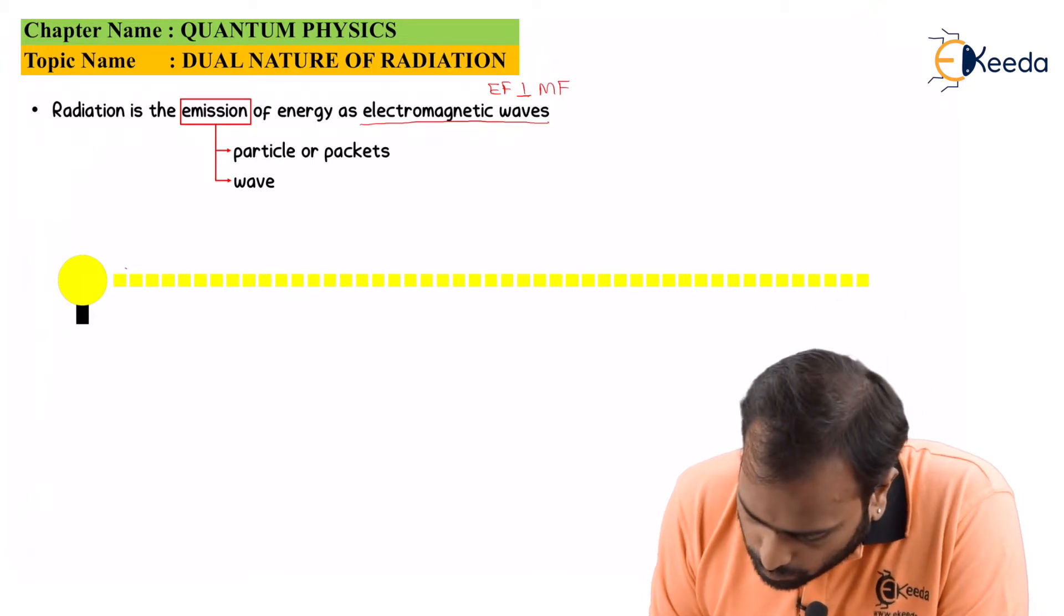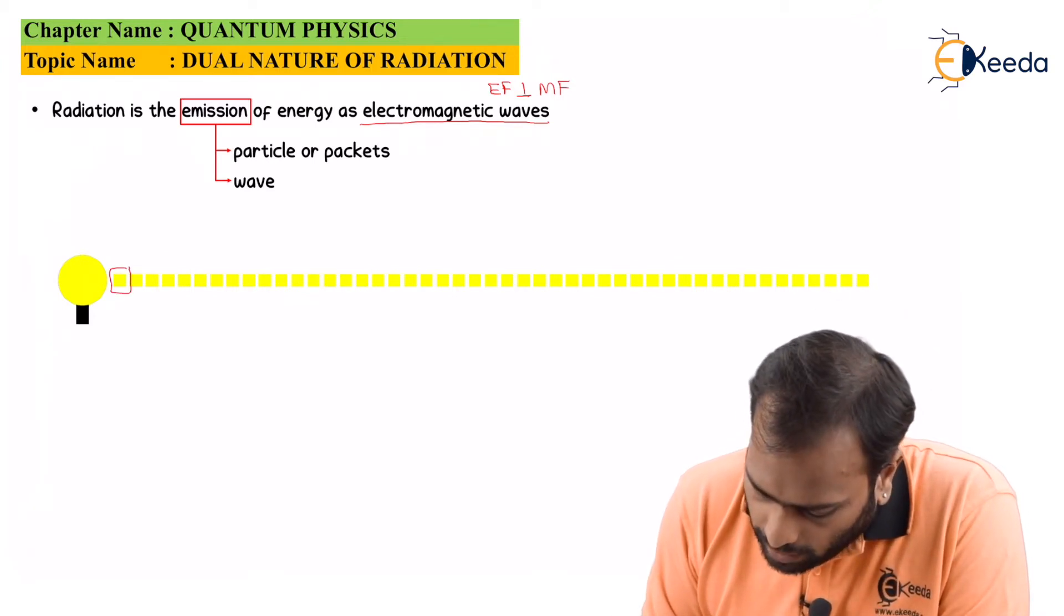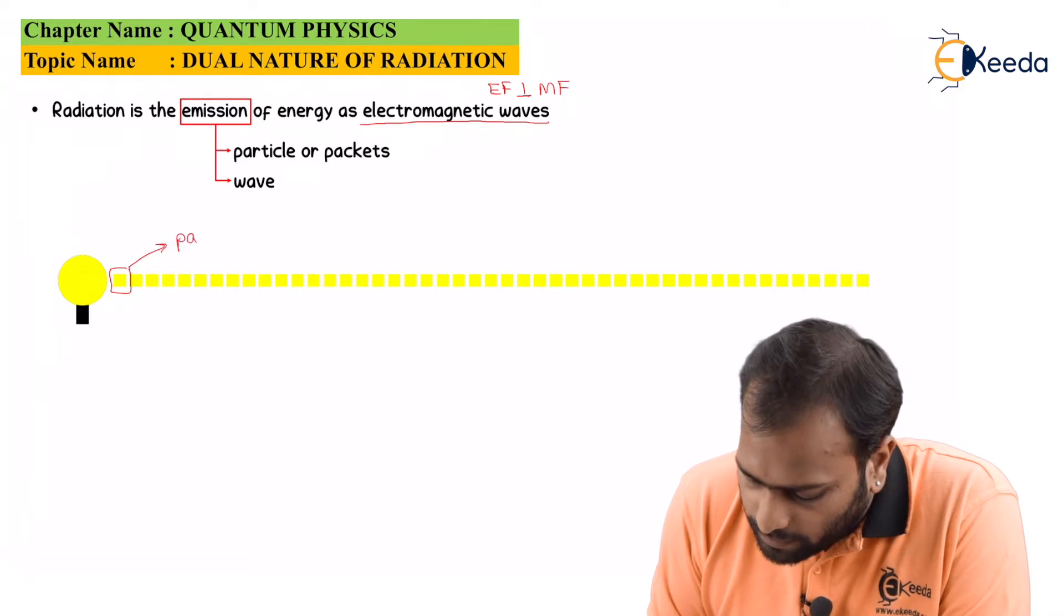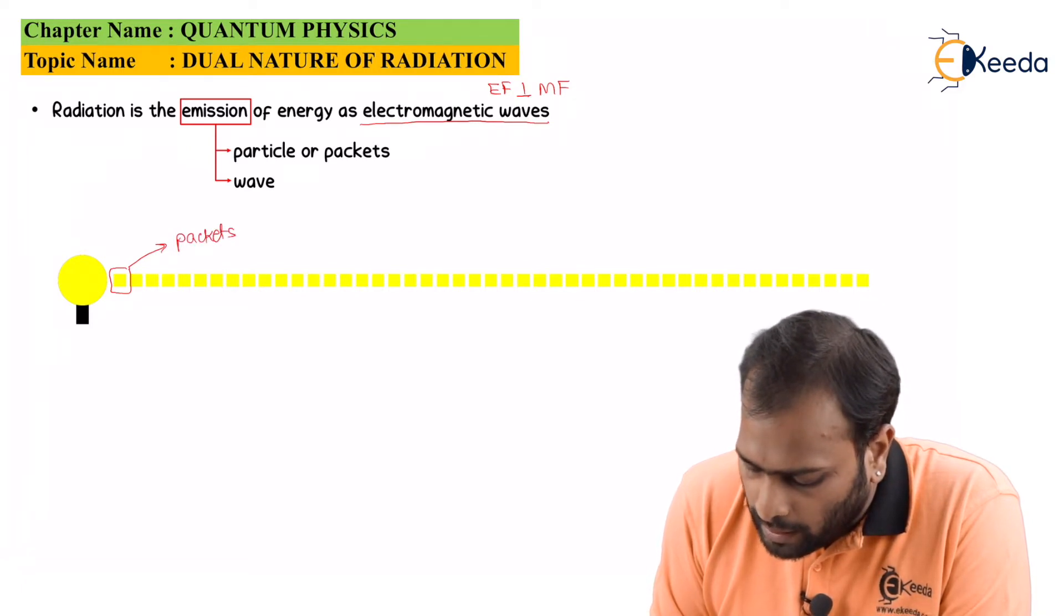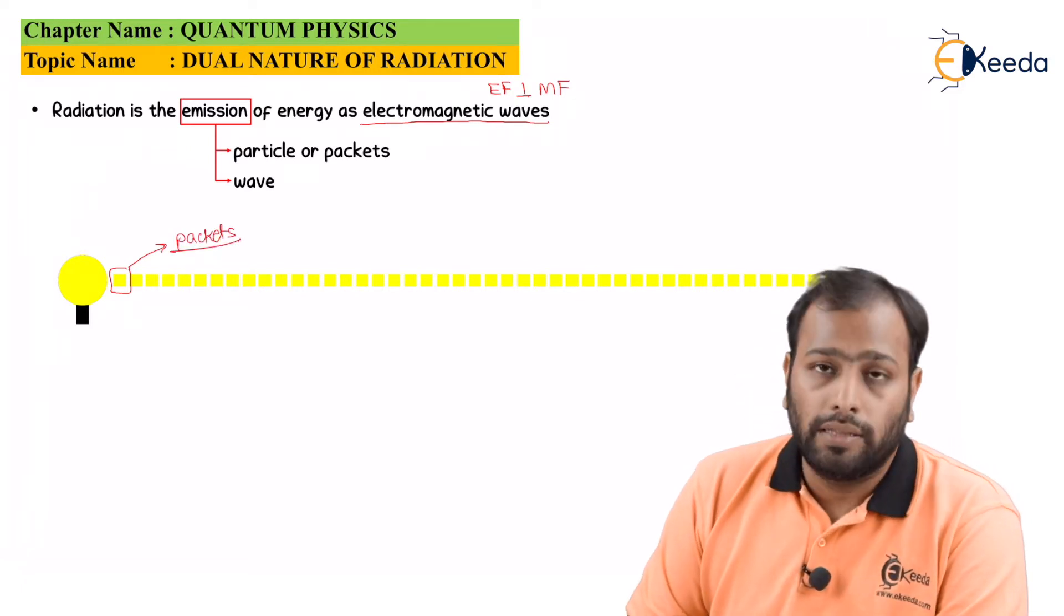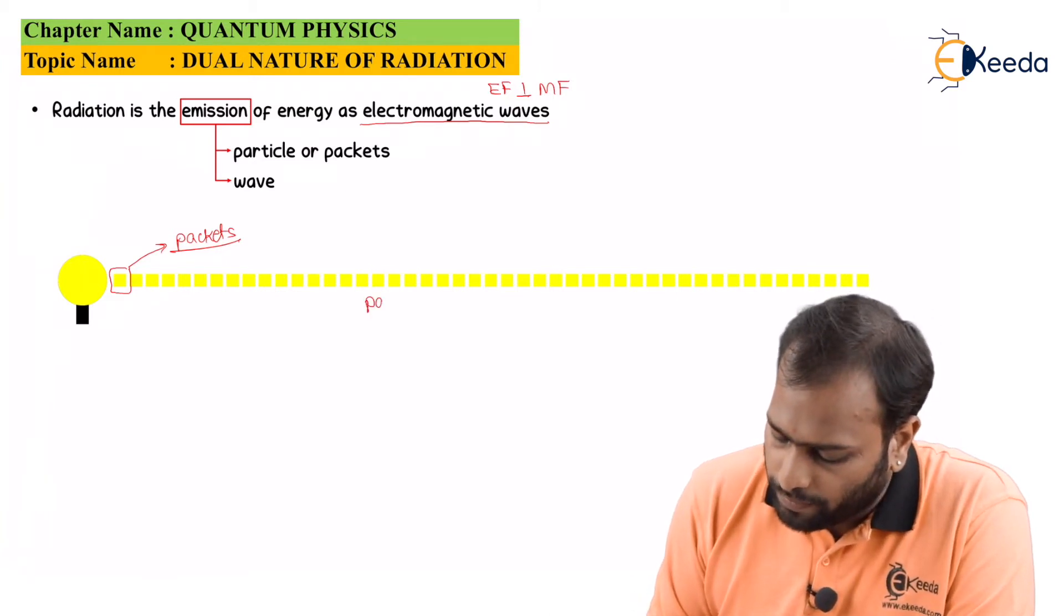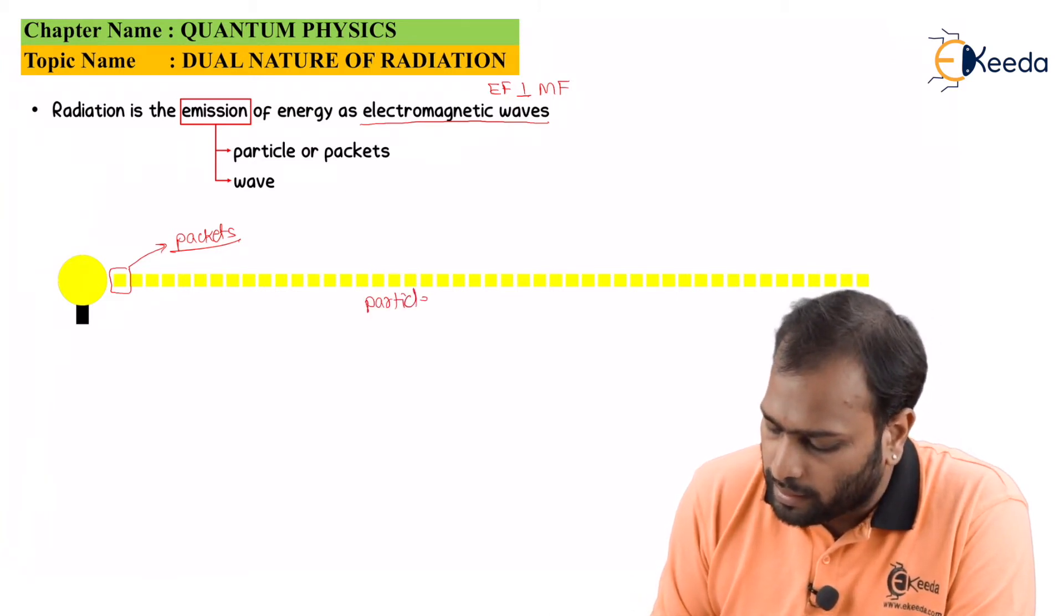Now, these small things as you can see, they are called as packets. These are called as packets of energy. Well, this is the particle nature of light. As you can see, this is the particle nature of light.